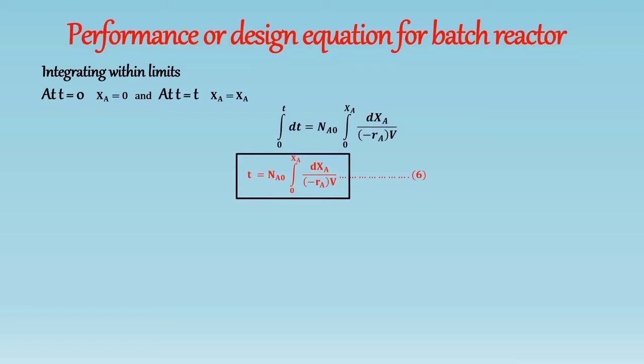This equation is a general equation showing the time needed to achieve conversion. This equation also called as general design or performance equation for batch reactor. So from this equation we can say that volume, that is V, and rate, that is minus RA, may change as the reaction proceeds.